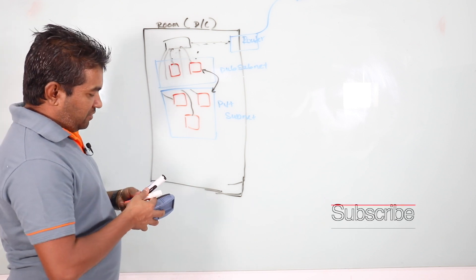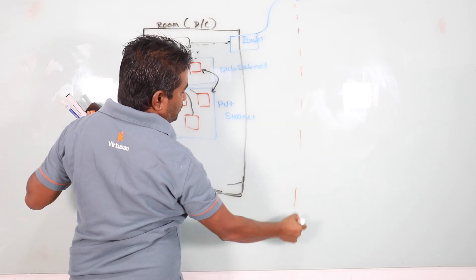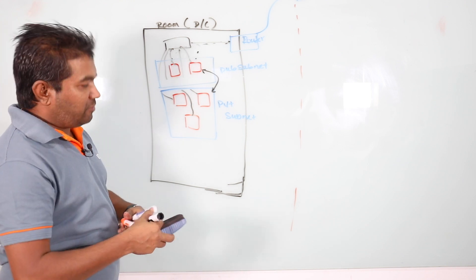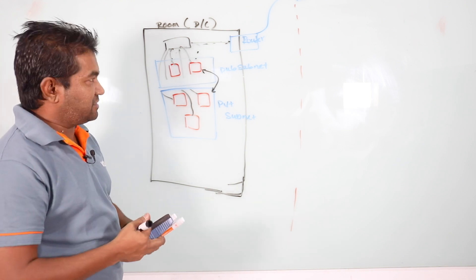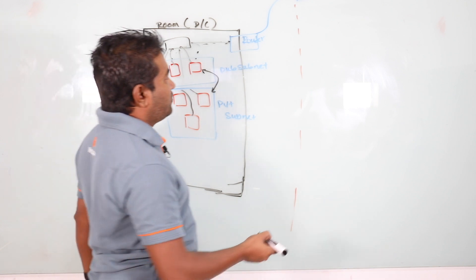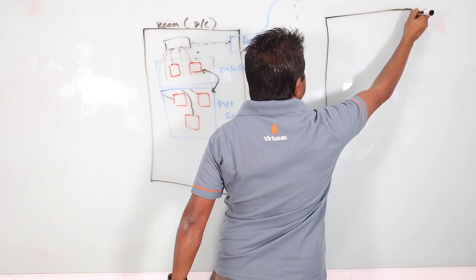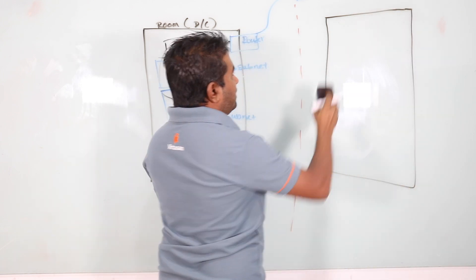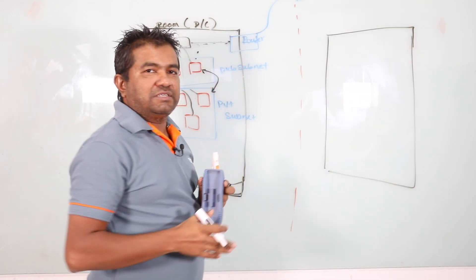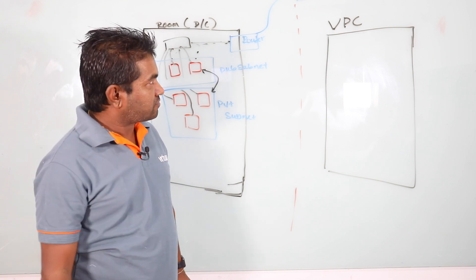Now we're going to ship this data center into the cloud. I'm going to draw this same data center on the cloud and explain how the naming works. I'm going to draw it as an AWS data center, but if you choose another provider like Google the names are almost the same. In the cloud you get an account and you create your data center — we don't call it a data center, we give it a special name: VPC, Virtual Private Cloud.